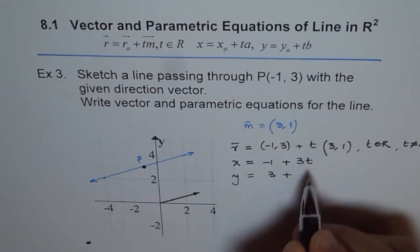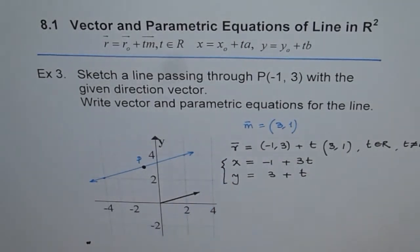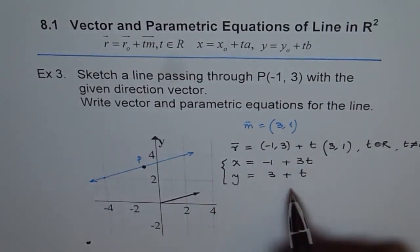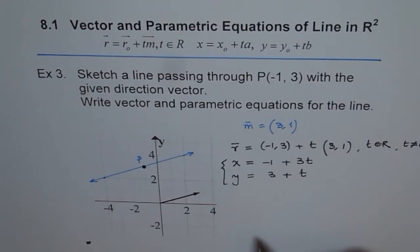...plus t. So that becomes the parametric equation, correct? Why is it called parametric equation? Because here t is the parameter in which this line is being defined. So, the line is single dimension, so we have one parameter.